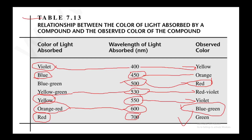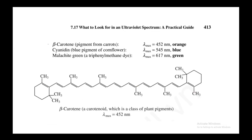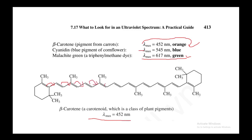The major concept of this lecture is to clarify that what you see is the observed color — it is not the actually absorbed light. For example, beta-carotene, the pigment from carrots, is orange and has a lambda-max of 450 nanometers. Cyanidine, a blue pigment of cornflower, has a lambda-max of 545 nanometers. Beta-carotene is a carotenoid with a highly extended pi conjugation system, which is why it absorbs at such a long wavelength and appears in the visible region.